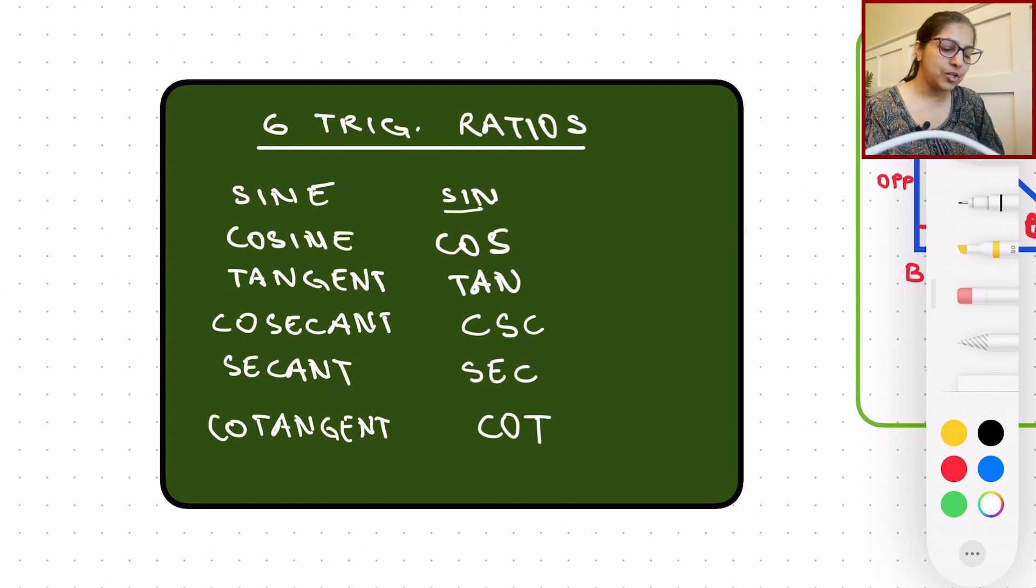So sine, cos, tan, cosec, sec, and cot in short, that is how we say it. And let's go over these three new ones and how we can calculate or understand these three ratios from the first three, which is going to be sine, cosine, and tangent.